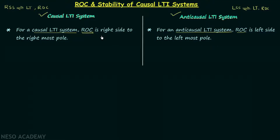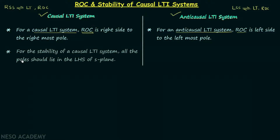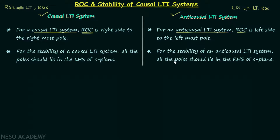Now we will talk about stability. For the stability of a causal LTI system, all the poles should lie in the left half of the S-plane. On the other hand, for an anticausal LTI system, for stability all the poles should lie in the right half of the S-plane.